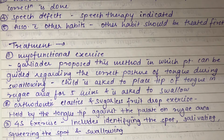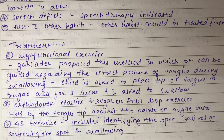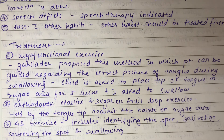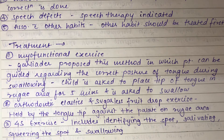Orthodontic elastics and sugarless fruit drop exercise: the tongue tip is held against the palate using an orthodontic elastic and a sugarless fruit drop. The lemon candy exercise is similar — a lemon candy is placed on the tongue tip, and the patient is asked to hold the candy against the palate with the tongue tip and then swallow.